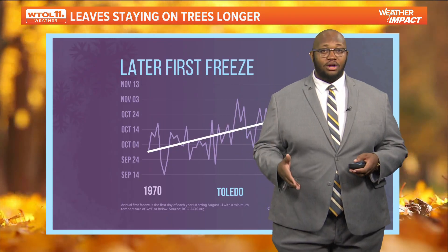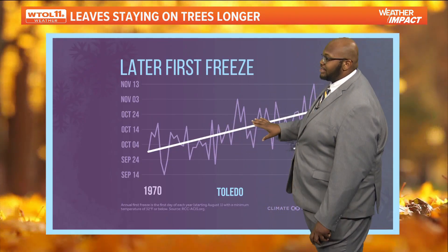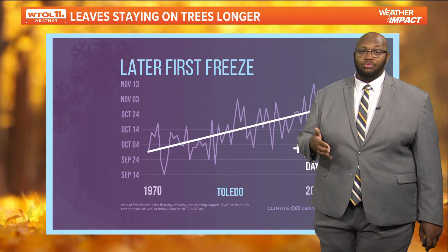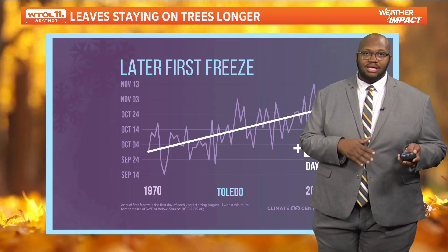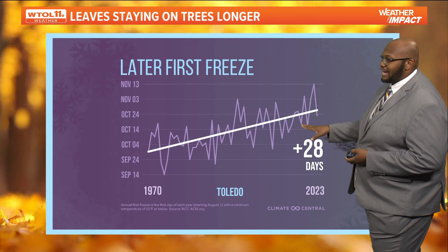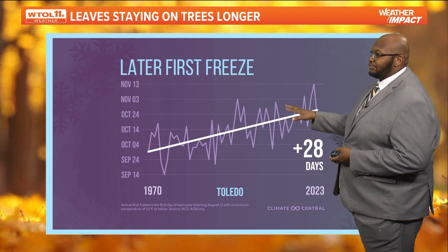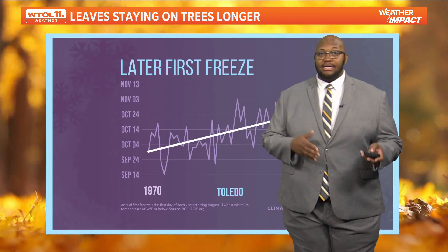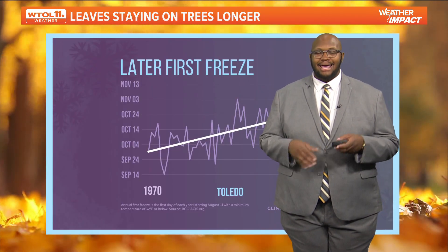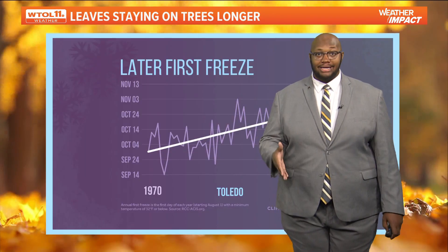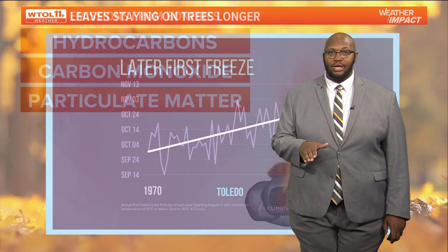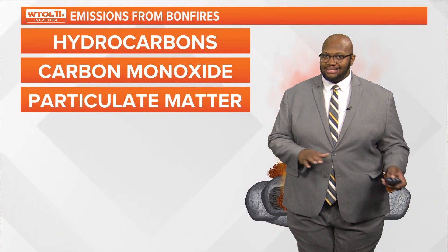When we talk about later frost and freeze events: when you start to see those freeze conditions, that's when we really see a lot of those leaves get affected. On average, we've seen the latest first frost about 28 days later than before. That could mean those leaves are staying on the trees longer because we're seeing later and later first frosts and warmer conditions — not only throughout the winter months, but throughout the fall months as well. That's not necessarily a good thing, though.